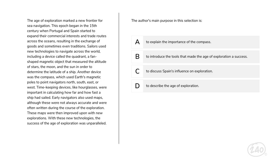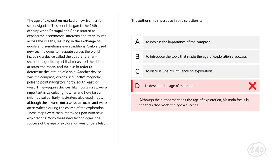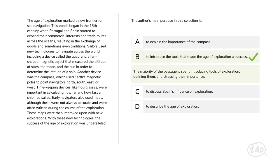Question one: The author's main purpose in this selection is — A: to explain the importance of the compass; B: to introduce the tools that made the age of exploration a success; C: to discuss Spain's influence on exploration; or D: to describe the age of exploration. At first I thought D was the correct answer, but it's B. Although the author does mention the age of exploration, the majority of the passage is spent discussing the tools of exploration.